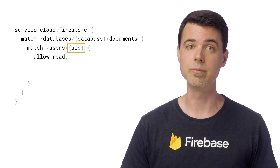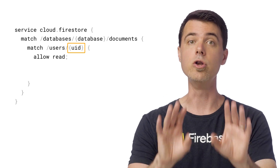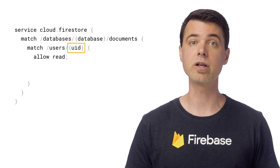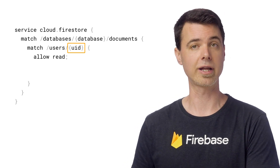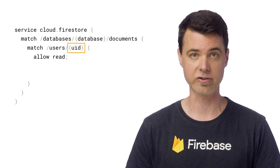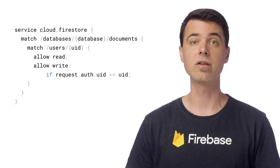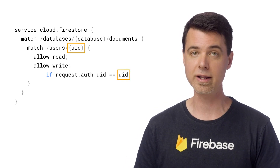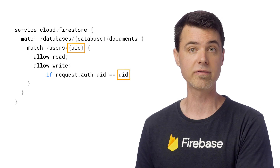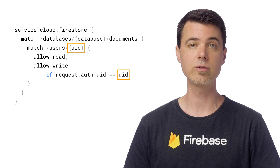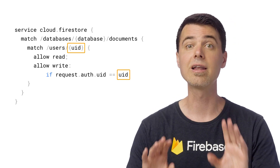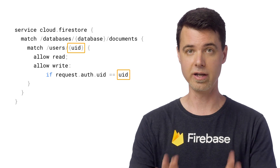So now, all documents in the users collection are readable by everyone, but no one can write anything yet. A useful thing about wildcards is that they become string variables that you can use in the expression that you write to allow access. I'll take advantage of this to indicate who can specifically read and write each document in this collection. I'll add another line here which says that the only user that can write the matched document is the Firebase Auth account with a UID that's the same as the UID wildcard string value. Now, everyone can read everyone else's user document, but only the currently authenticated user can write their own document. I'll say a lot more about how authentication works with security rules in a future video.